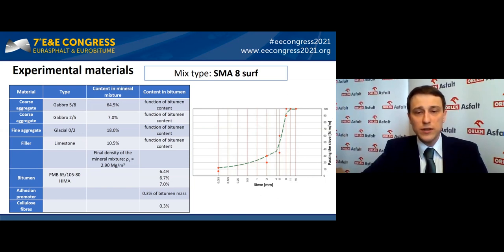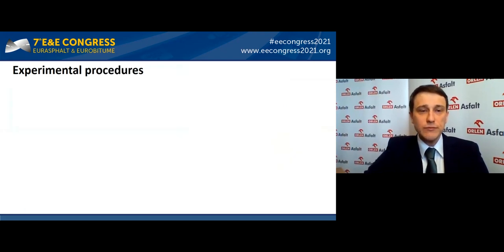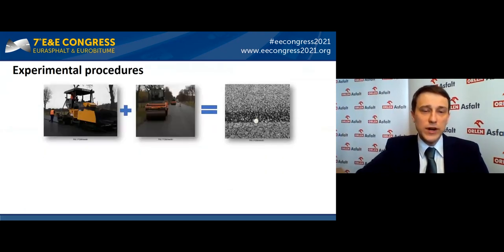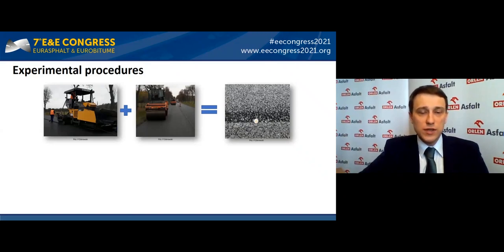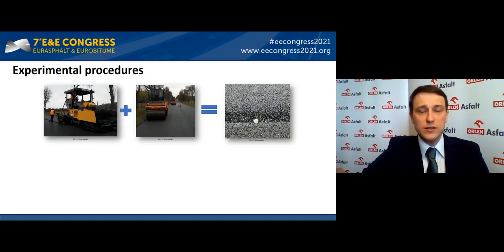Regarding WMA additives: two types were tested — 2% Fischer-Tropsch wax and 0.4% amine derivative. At 145°C compaction temperature, both additives performed quite well. However, at 115°C, only Fischer-Tropsch wax showed good properties and very good results in improving compaction, while no improvement was seen when using the amine derivative. The research was conducted within the project on application tests of Orbiton HIMA in asphalt mixtures, performed between 2016 and 2019 in the research and development department of Orlen Asphalt. More results can be found in publications downloadable for free from the company website.